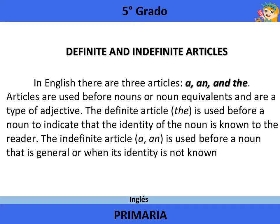Definite and indefinite articles. In English there are three articles: A, AN, and THE. Articles are used before nouns or noun equivalents and are a type of adjective.